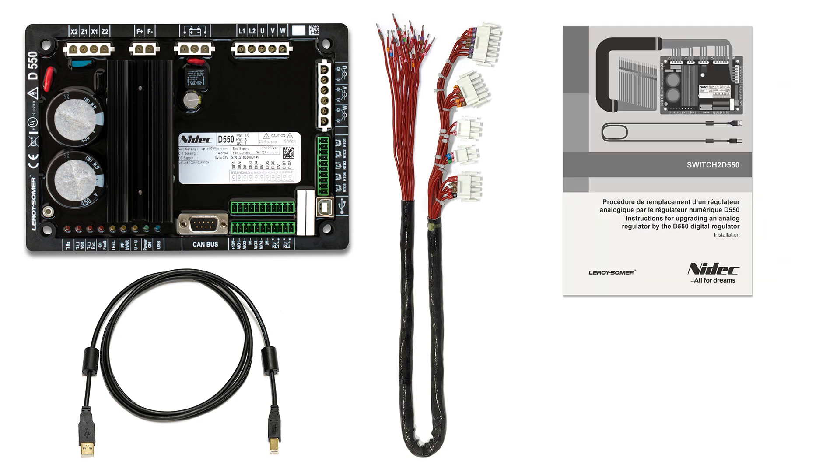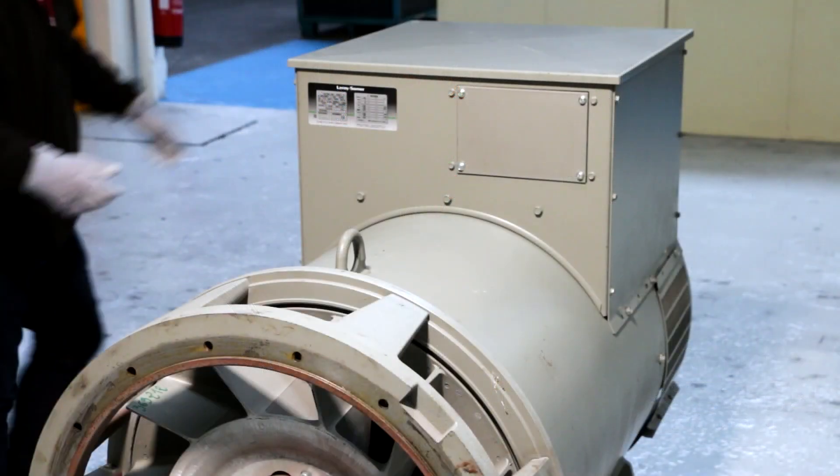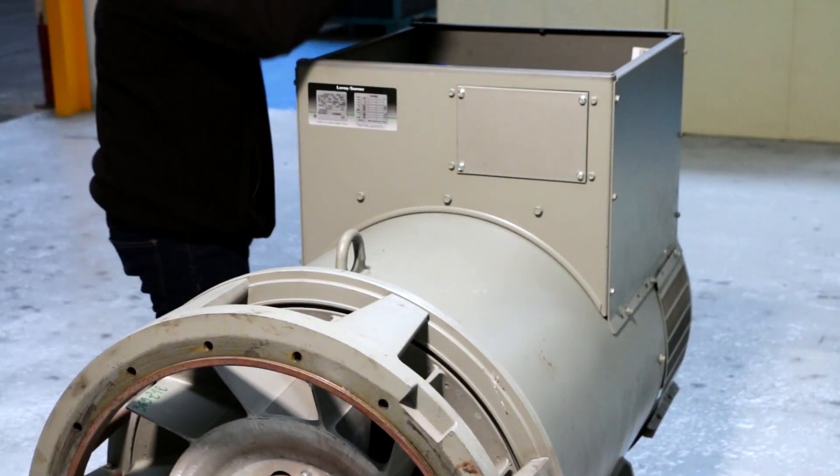If your machine is not equipped with the optional terminal block, we recommend you to buy one. This will make commissioning much easier. Remove the panels to access the voltage regulator.